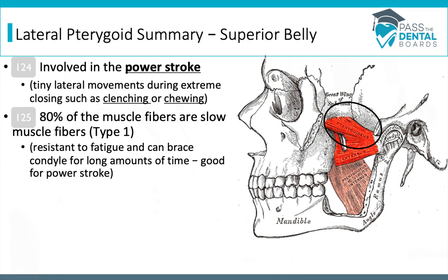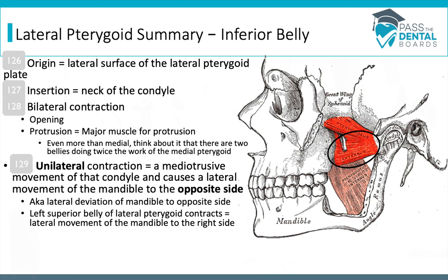The inferior belly originates on the lateral surface of the lateral pterygoid plate and inserts on the neck of the condyle. This is the muscle involved with opening and protrusion, and it is the major muscle used for protrusion — even more than the medial pterygoid. When there's unilateral contraction, we get a mediotrusive movement on the condyle that causes lateral movement of the mandible to the contralateral side.